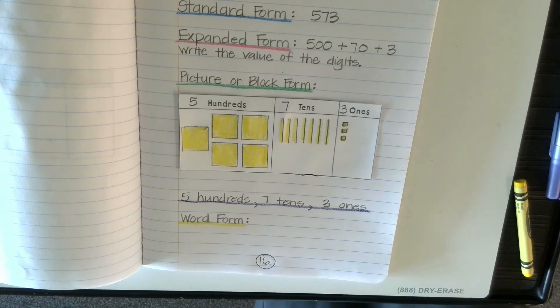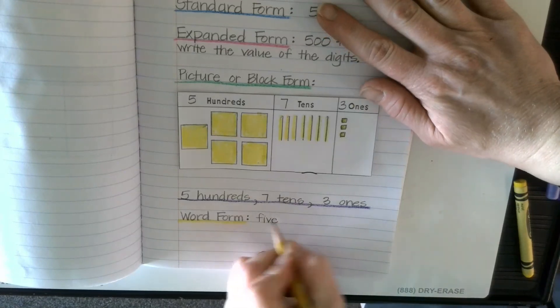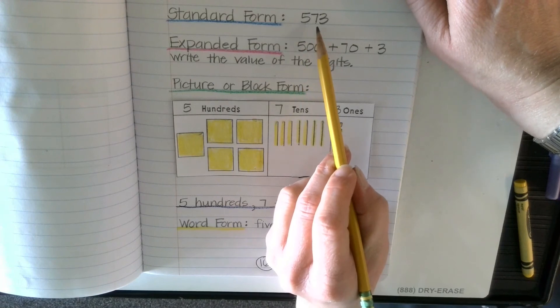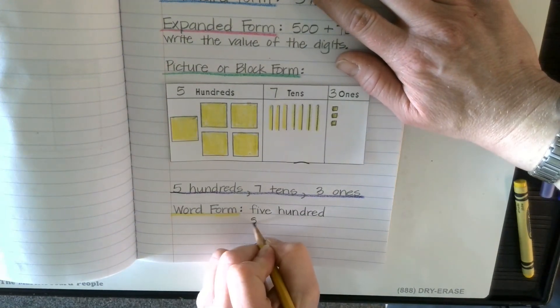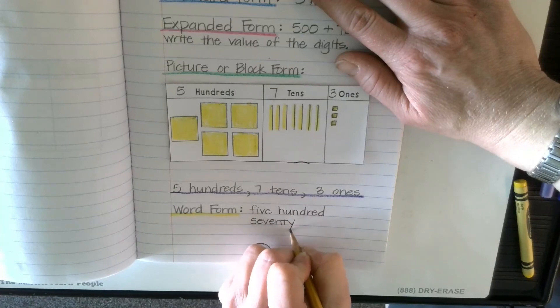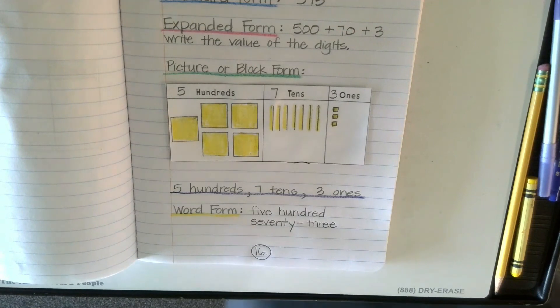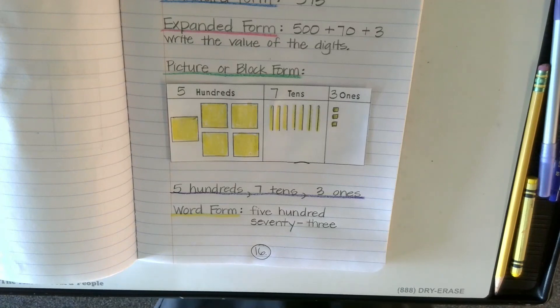And that's where I just write everything with words, and these are your spelling words also, so you shouldn't have any trouble. So I need to write 500, and I write it just the way that I say it when I say this number. I say 573, so I'm going to say 500, and then 70 dash 3. So this was just a quick review of all the different ways that we can write a number. I hope you have a good math day. I'll see you later.